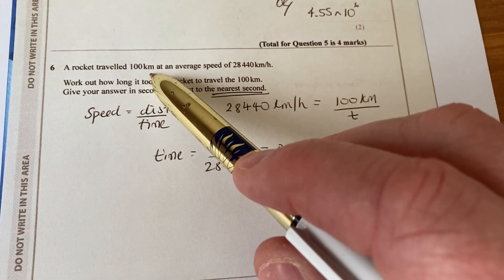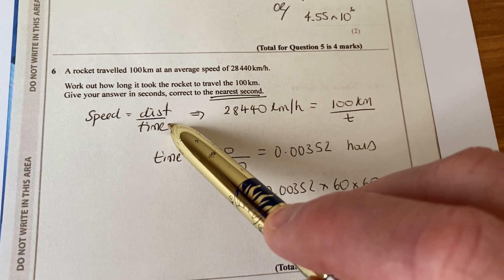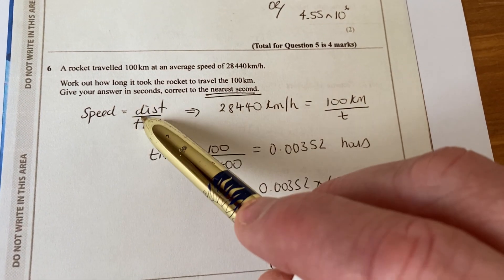My distance is given in kilometers, so if I use speed, distance, time, I will get my answer in hours. S equals D over T.